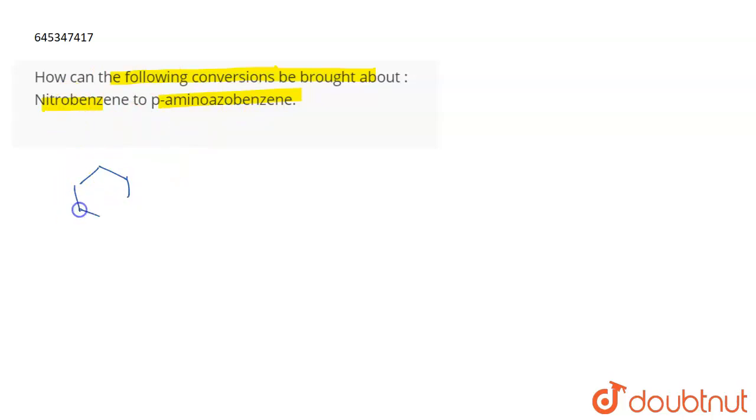Nitrobenzene means a benzene ring having a NO2 as a substituent. When nitrobenzene reacts with 6 hydrogen in the presence of Sn and HCl, it leads to the formation of aniline.